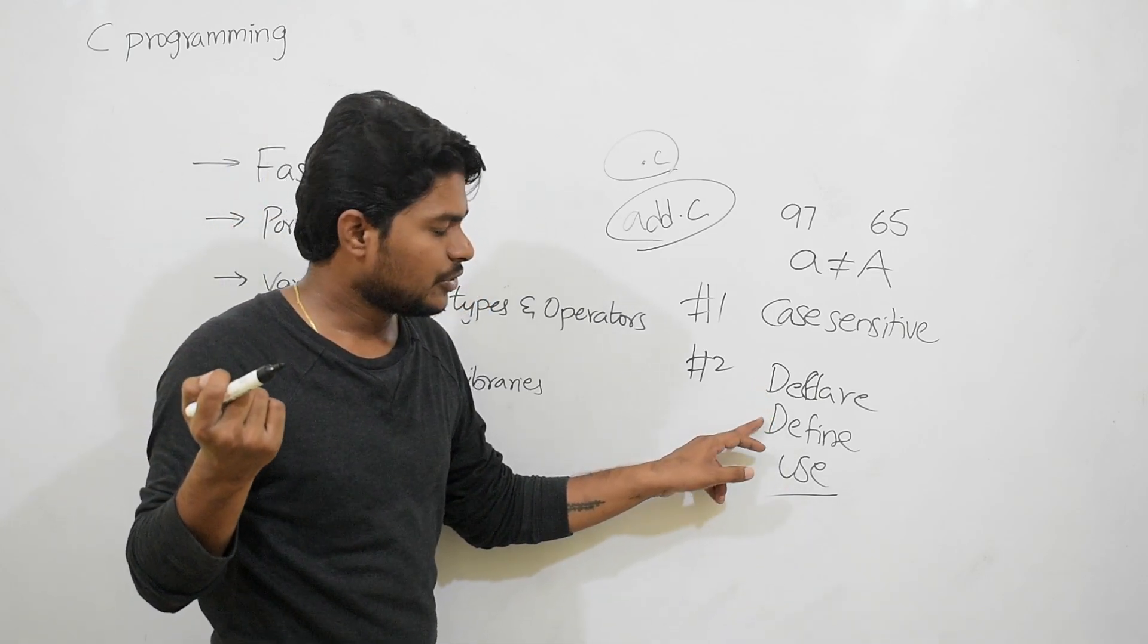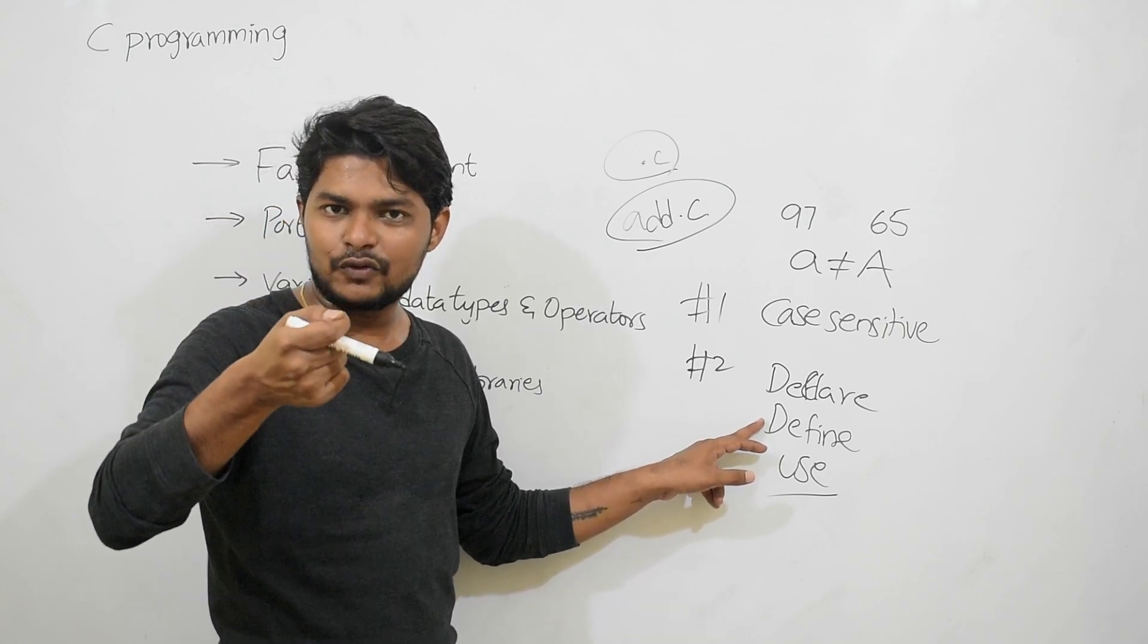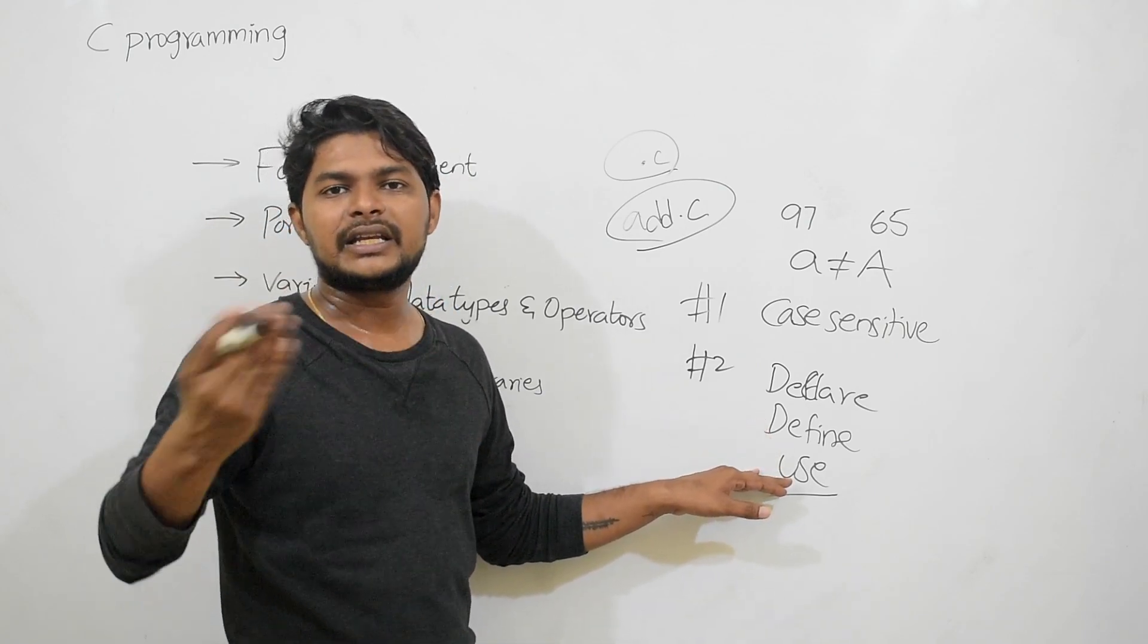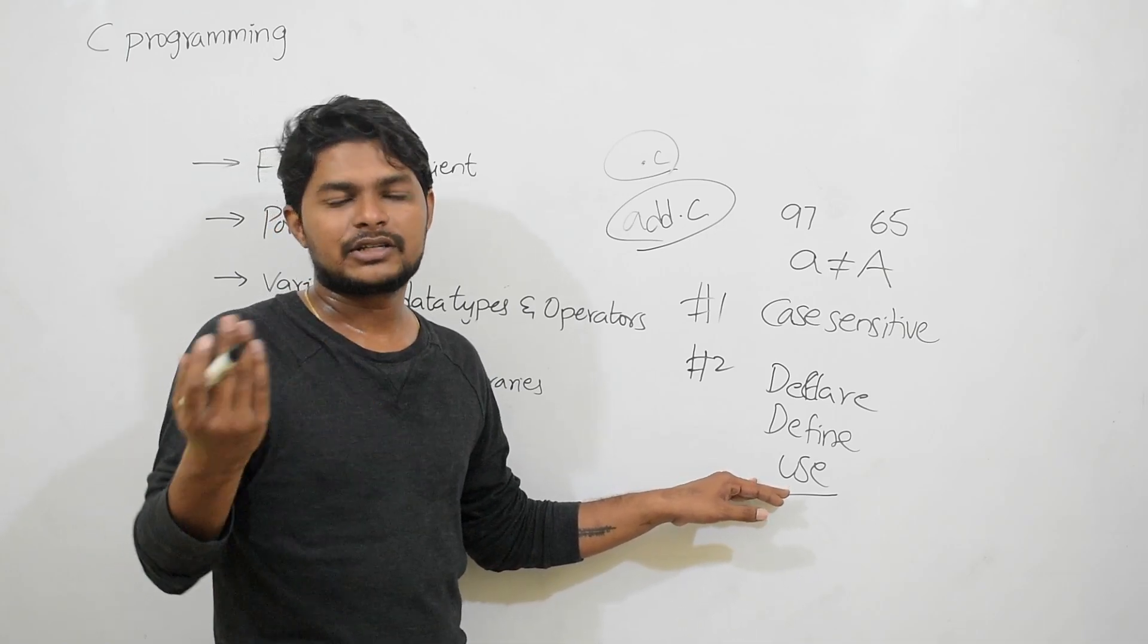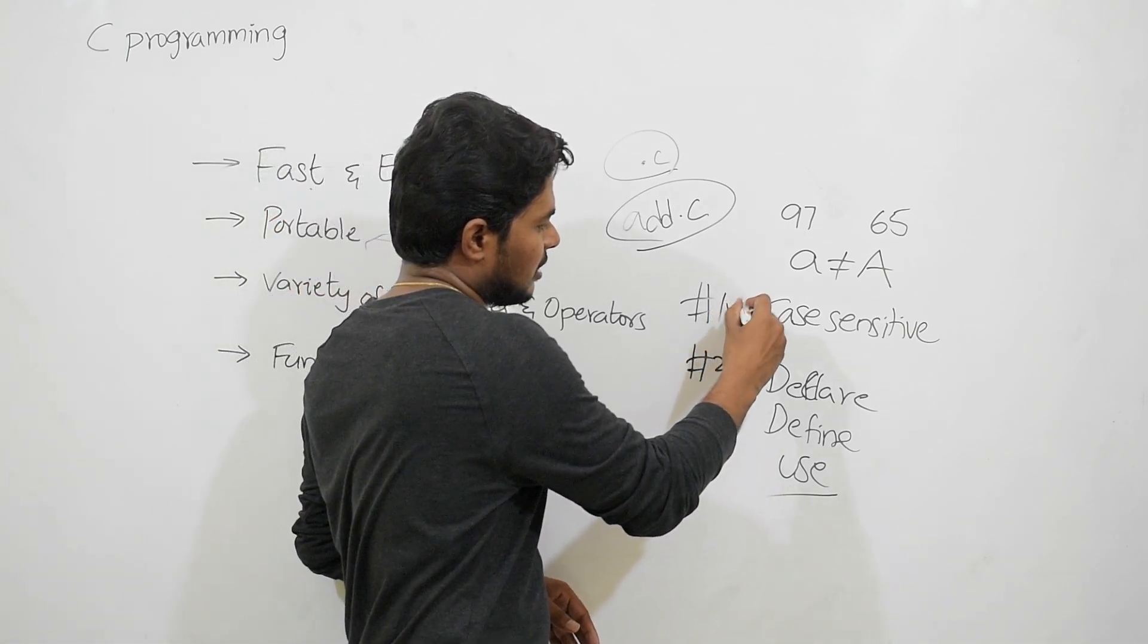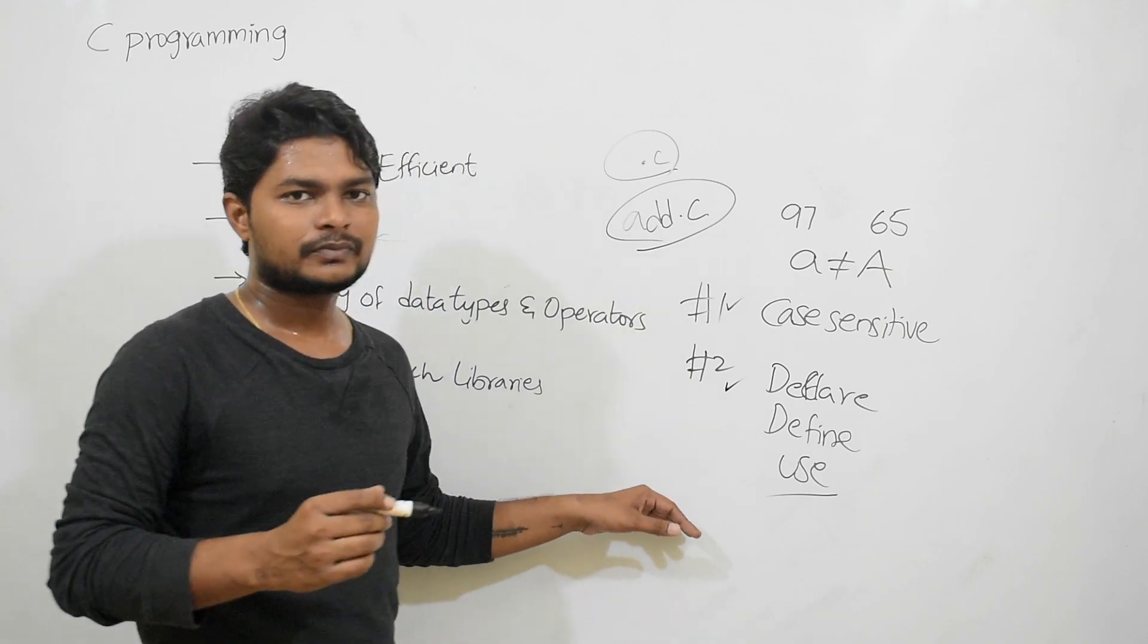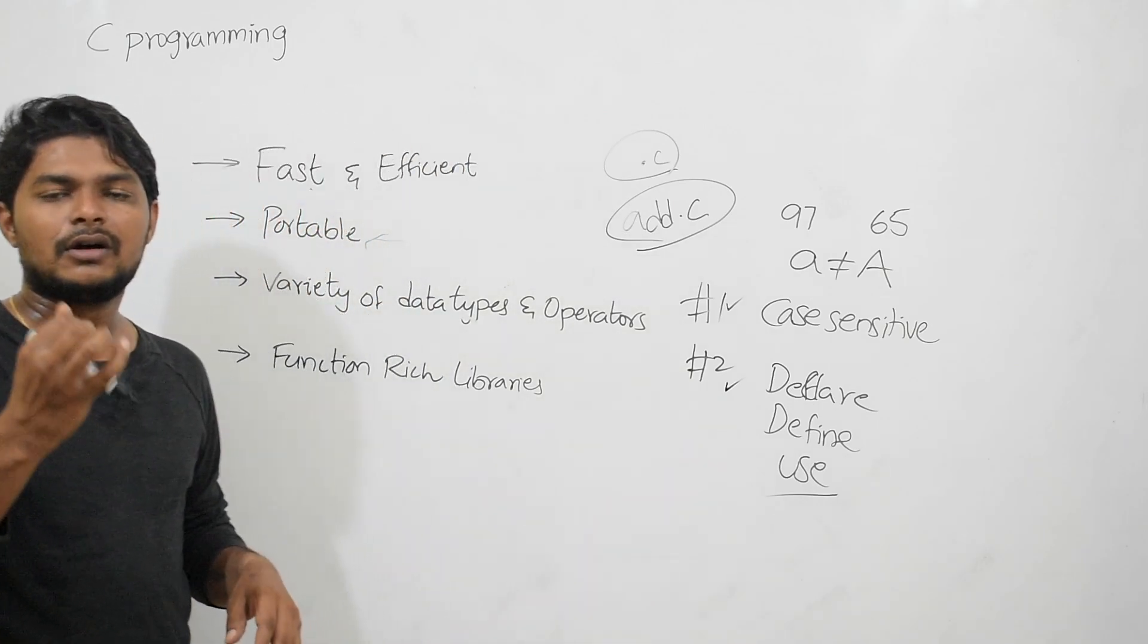Then use them, write the logic, like implementation of the logic. This is tip one, this is tip two. Here just we have seen four important characteristics of C programming.